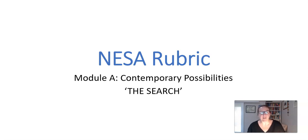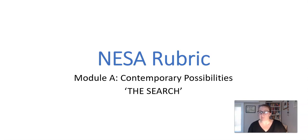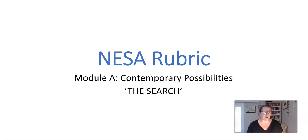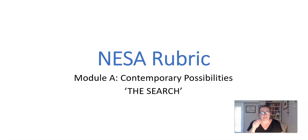Hi everybody. Today we're going to have a little look at the NESA rubric for our next module, which is Module A: Contemporary Possibilities. At KHS, we have a little theme that we run with when we do this module, and we call it 'the search,' because whenever we do stories, we're always searching for something — searching for entertainment, identity, and so on. Partly too, because when we do Contemporary Possibilities, we do a lot of really new stories that literally use internet searches.